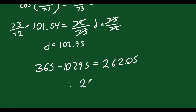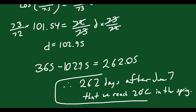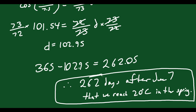Therefore, it's going to be approximately 262 days after June 7th that we reach 20 degrees Celsius in spring. That's how you would write your final answer.